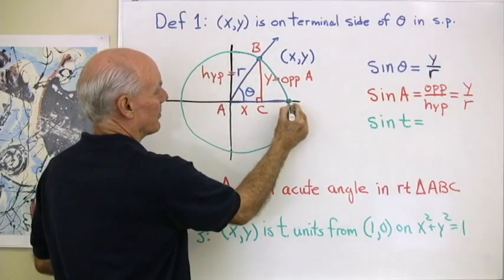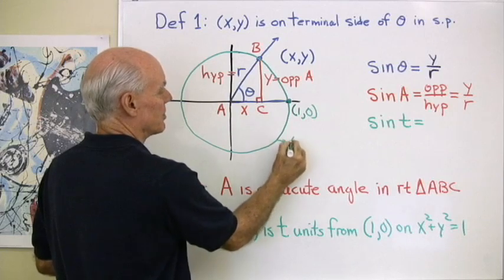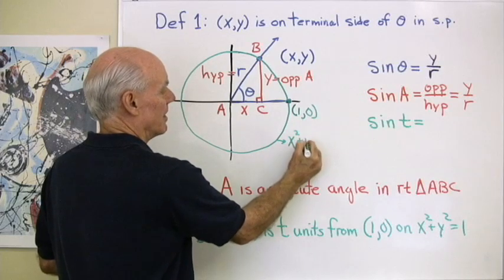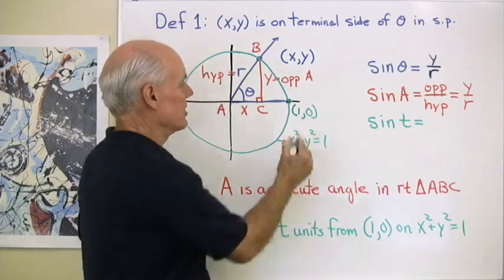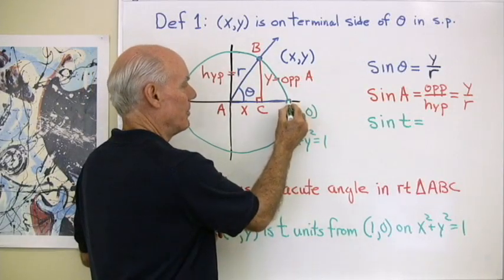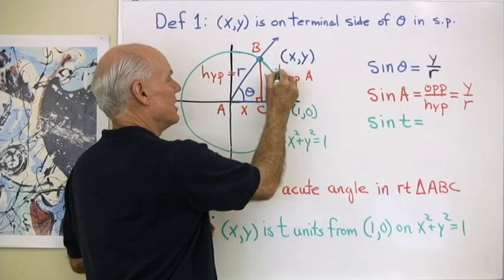And so I'm going to call this the point (1,0). So that means this is the unit circle that has an equation X squared plus Y squared equals 1. So T is the distance along the unit circle from the point (1,0) to my point XY. So this is T right here.